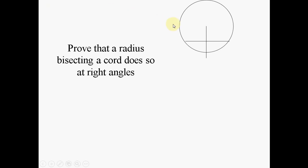Sometime in early high school we were asked to prove that a radius bisecting a chord does so at 90 degrees. Now how do we do that?